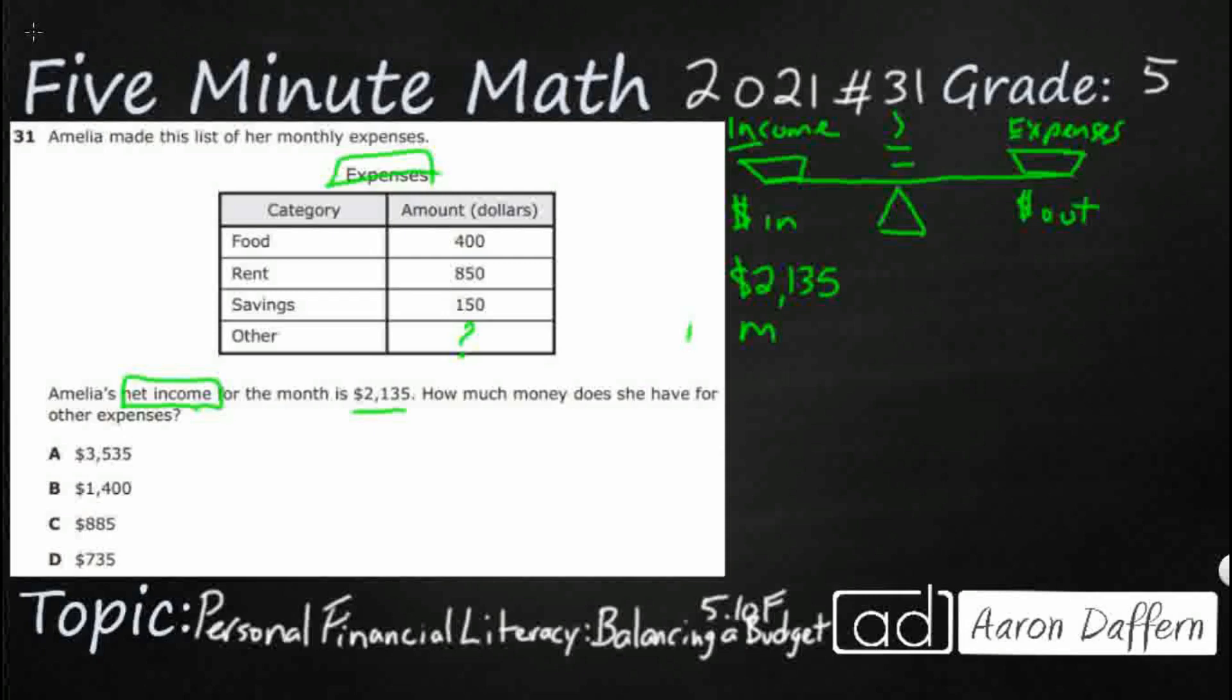We've got the net income, and then we've got the gross income. And this is our net income, which is what we're actually needing. So our net income is after taxes. This is actual money that you get. So she walks away from her job with $2,135.